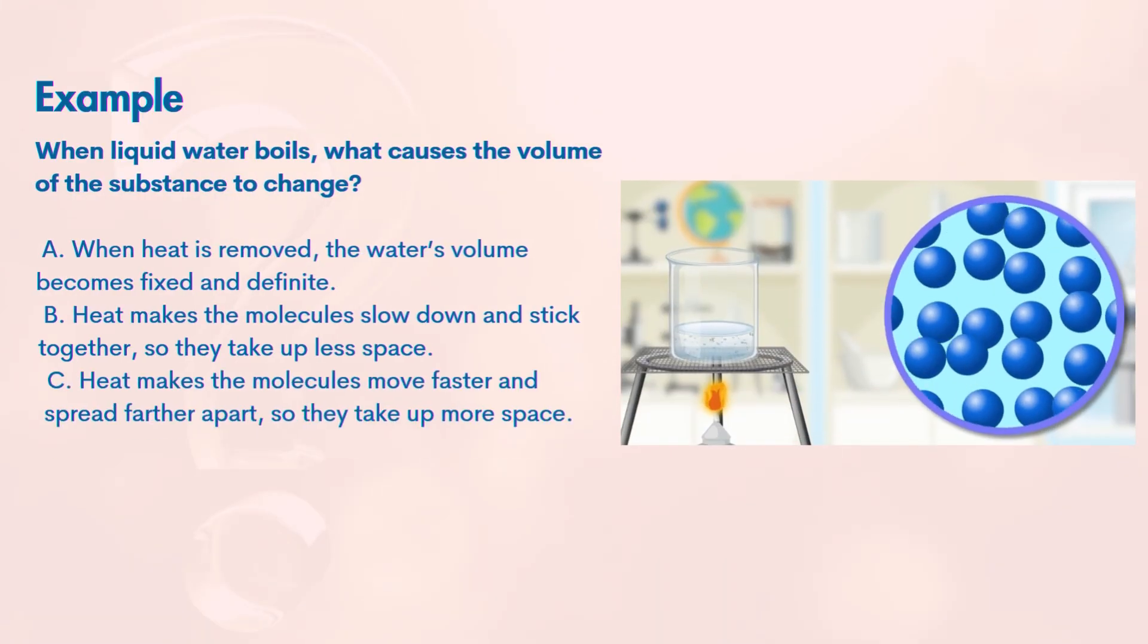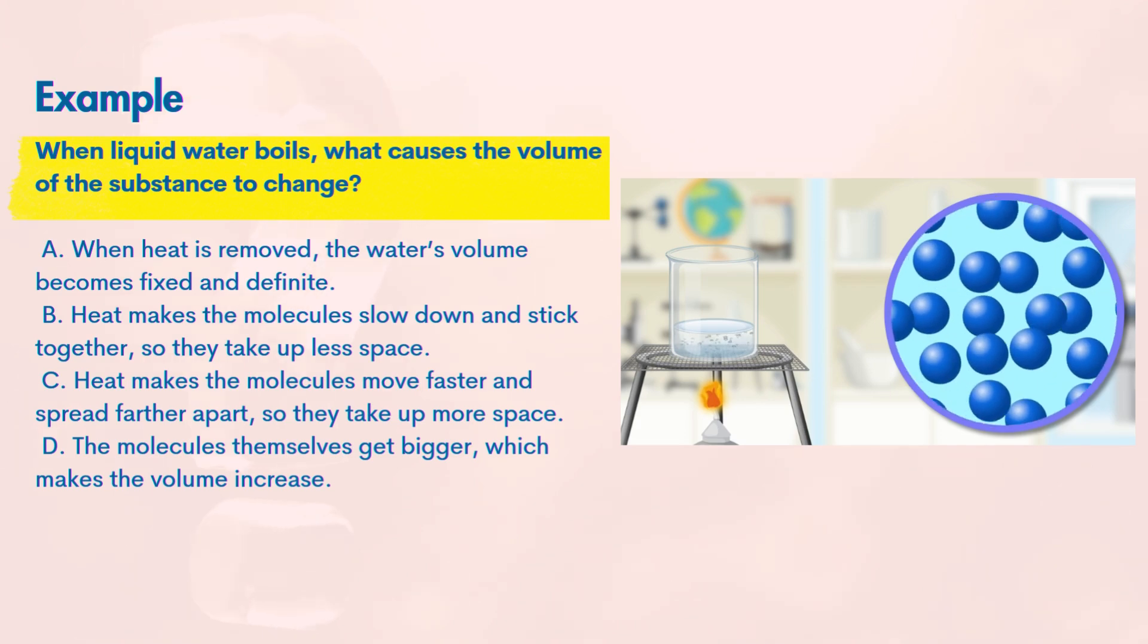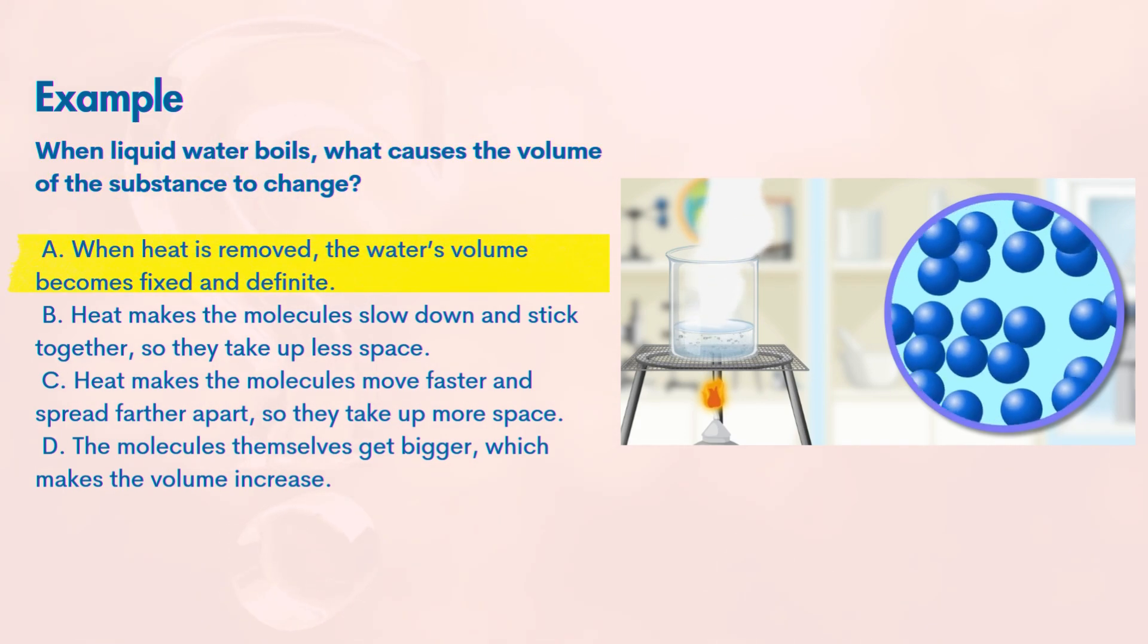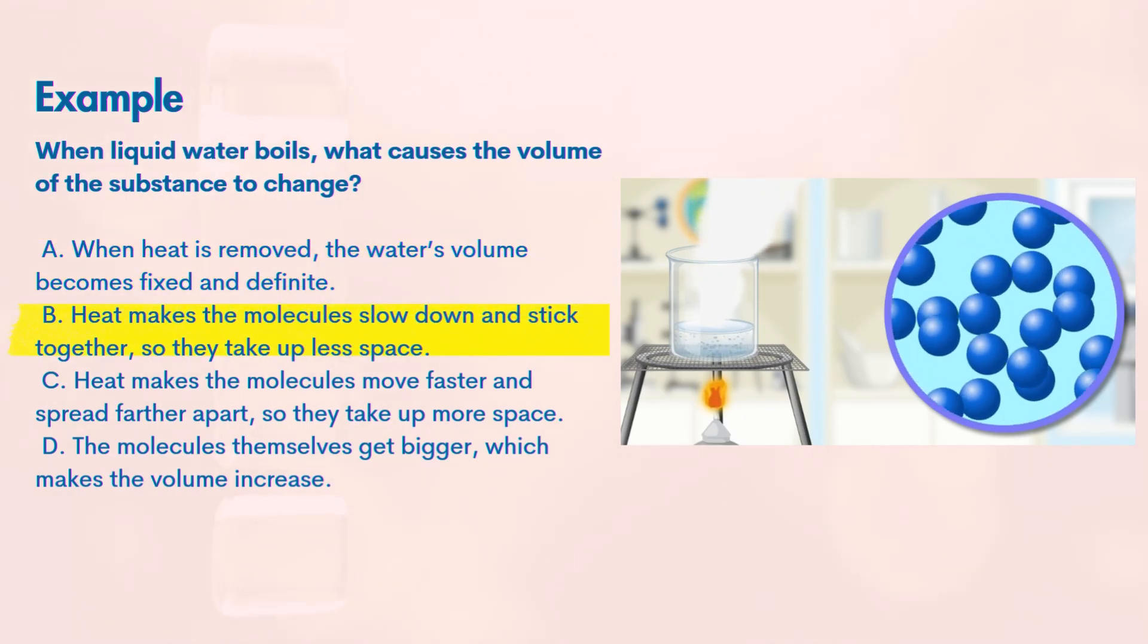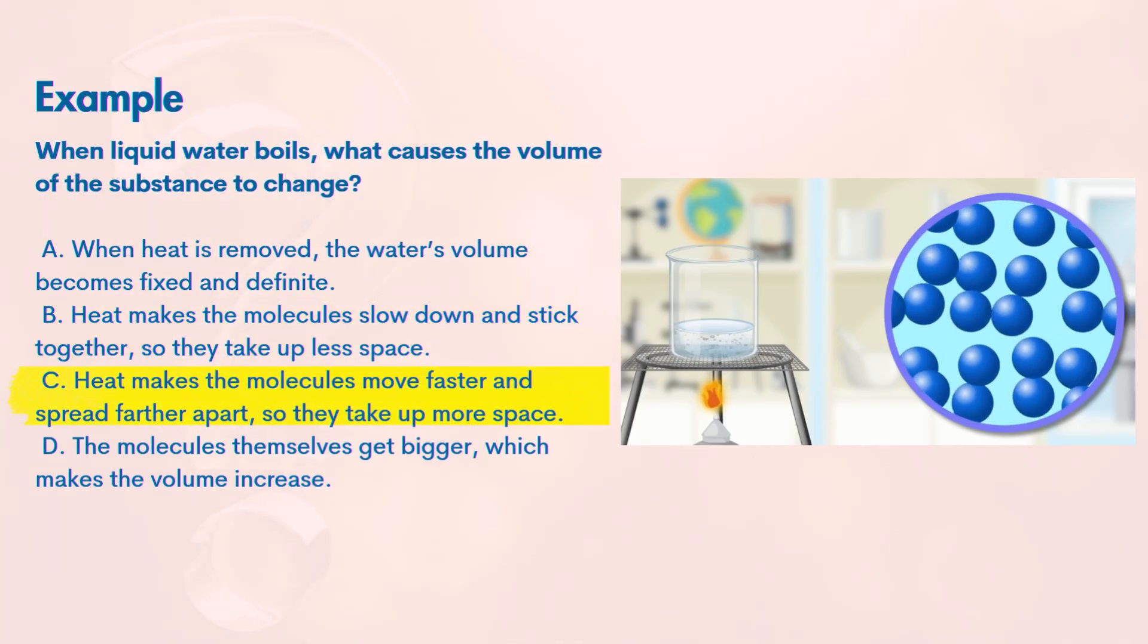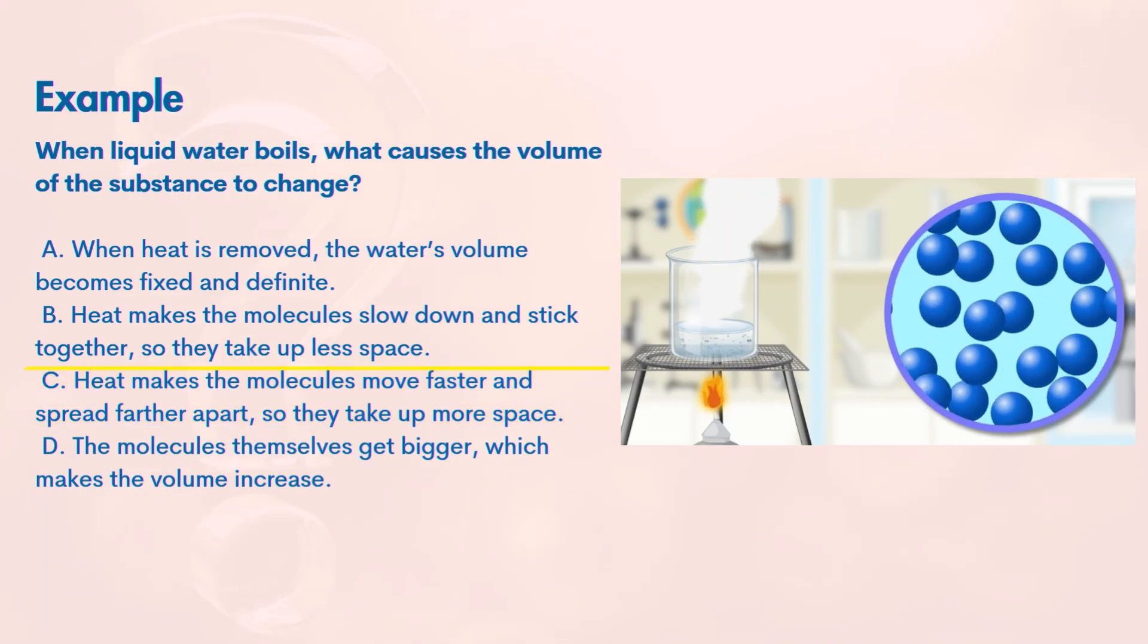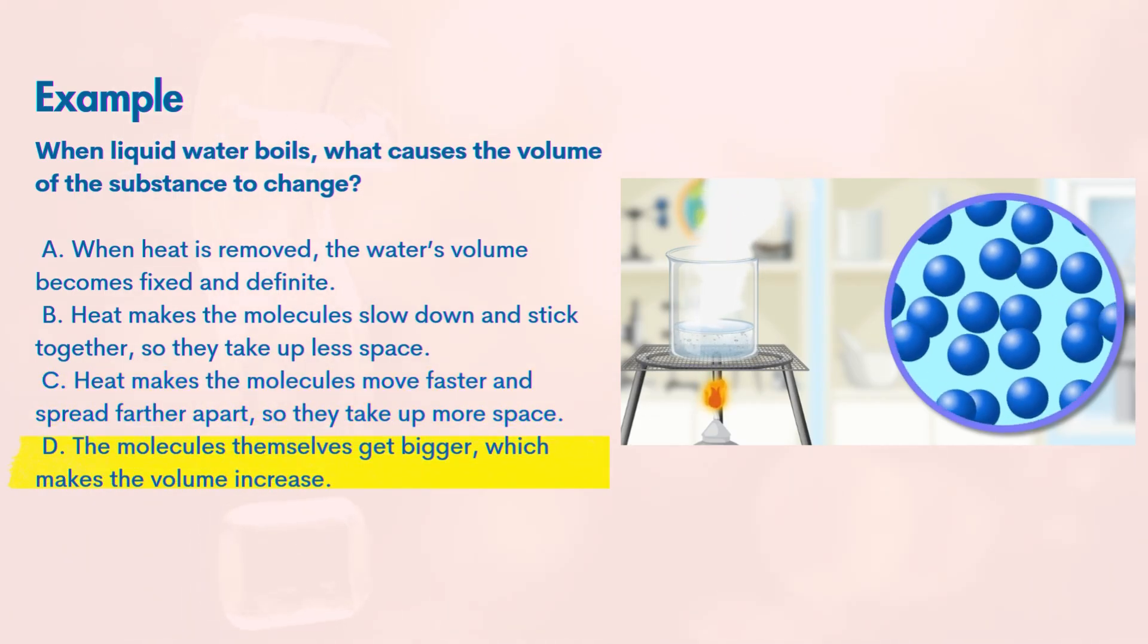Here's our review question. When liquid water boils, what causes the volume of the substance to change? Option A: When heat is removed, the water's volume becomes fixed and definite. Option B: Heat makes the molecules slow down and stick together, so they take up less space. Option C: Heat makes the molecules move faster and spread farther apart, so they take up more space. Option D: The molecules themselves get bigger, which makes the volume increase.